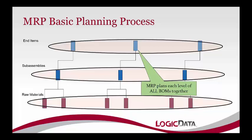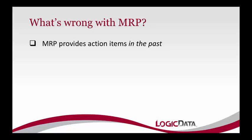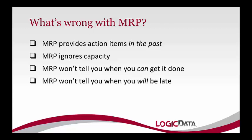MRP has some fundamental flaws — things it can't do because its logic is limited. MRP will oftentimes tell you that you should have done something in the past, recommending a purchase order that should have been released last week or a job put out for manufacturing last month. MRP does not consider the capacity of your plant — it assumes infinite capacity. And if you have a glitch in your supply chain, MRP does not have the logic to tell you when you will be late.